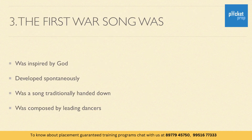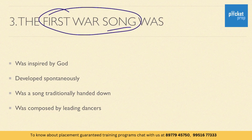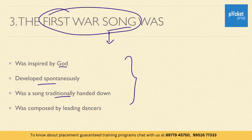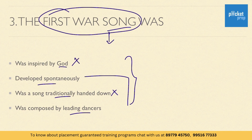Let's solve another question. 'The first war song' is a keyword — if we search for these words in the passage we will get the solution. Here are the options: was inspired by god; developed spontaneously; was a song traditionally handed down; was composed by leading dancers. The first war song was not traditionally handed down, and after it the idea of god arose. So options three and one are not relevant. That leaves 'developed spontaneously' or 'was composed by leading dancers.'